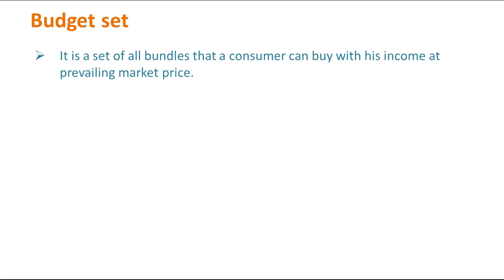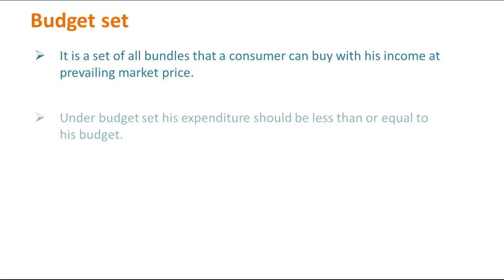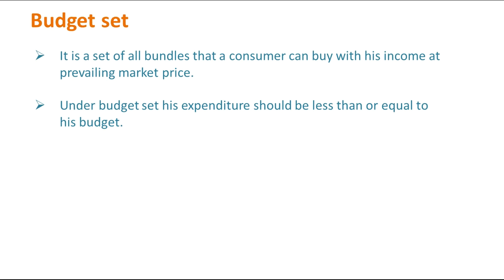What is a budget set? It is a set of all bundles that a consumer can buy with his income at the prevailing market prices. It is a concept of creating bundles within your income. When you are setting your budget set, your expenditure should be less than or equal to your budget — it cannot exceed your budget because you have limited resources and unlimited wants.